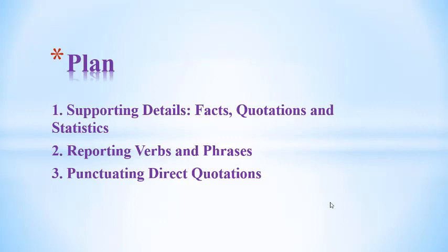Academic writing normally requires that you support your ideas and opinions with facts, statistics, quotations and similar kinds of information. You get these kinds of supporting details from outside sources such as books, magazines, newspapers, websites, personal interviews and so on. The supporting details in a text are important elements. The main ideas or topics of stories or papers are the most relevant and important parts. Writers must support their main points so readers will be certain the information is accurate.